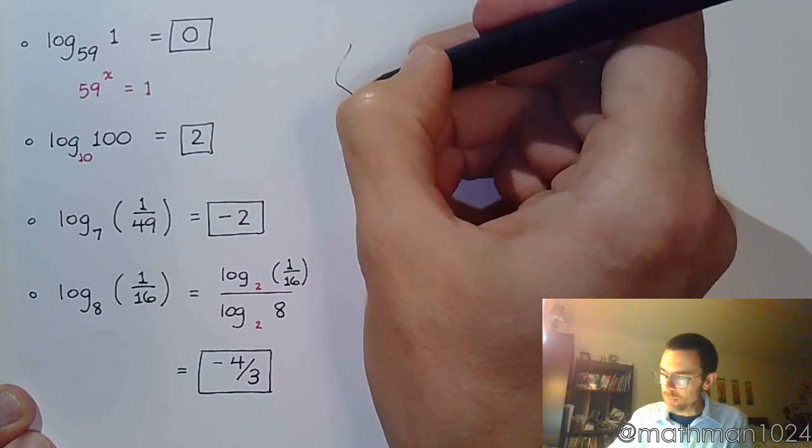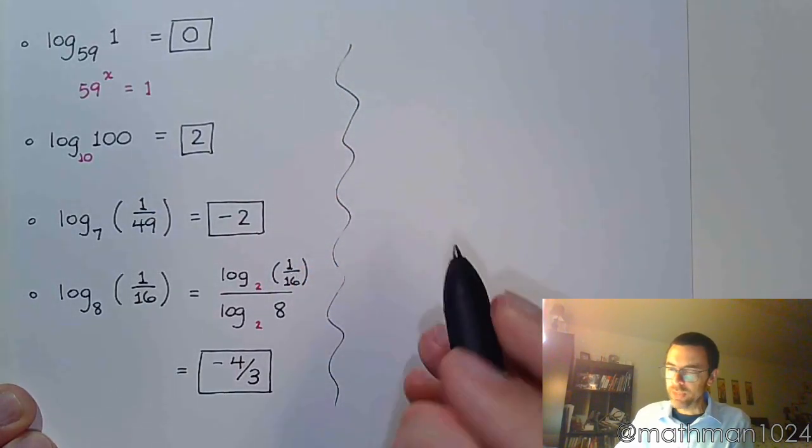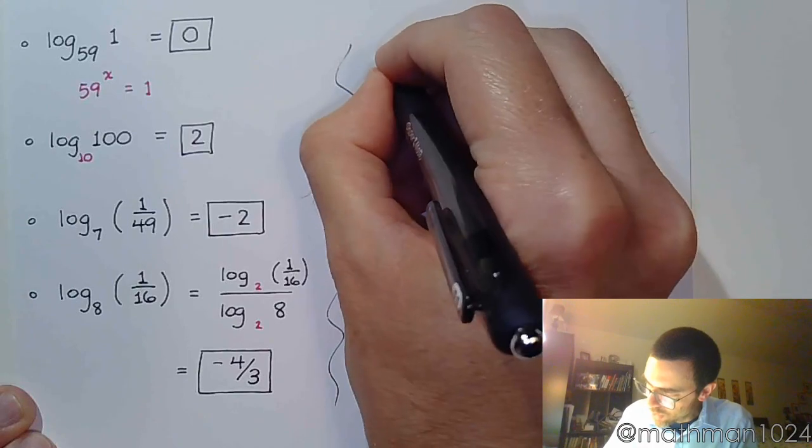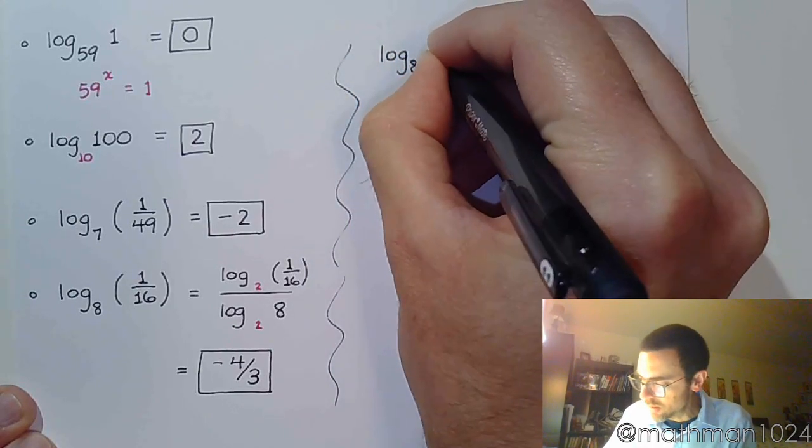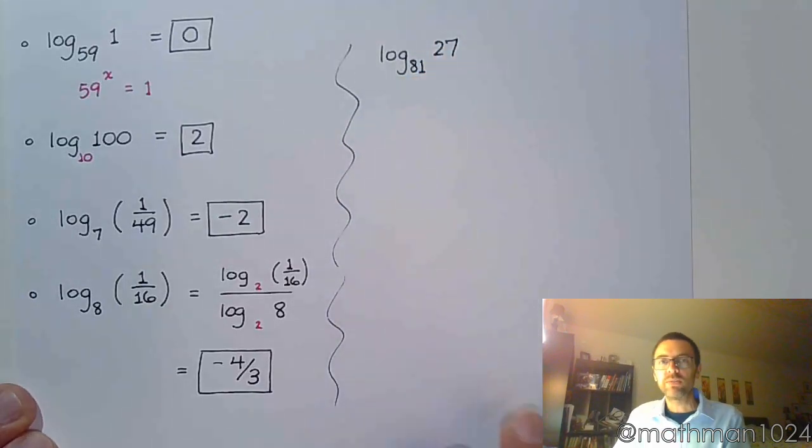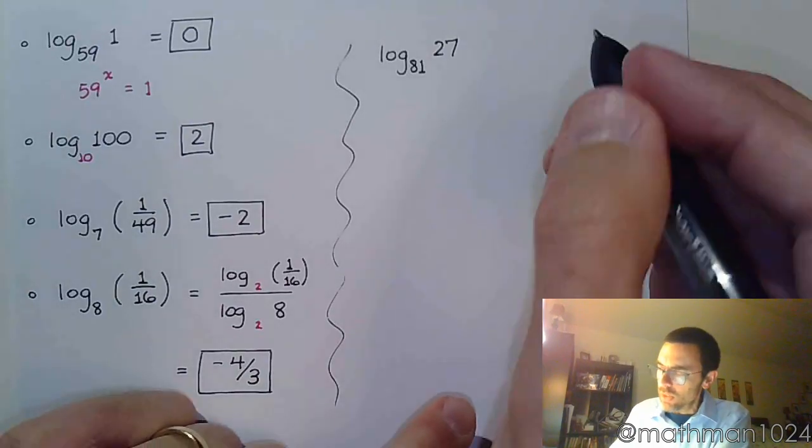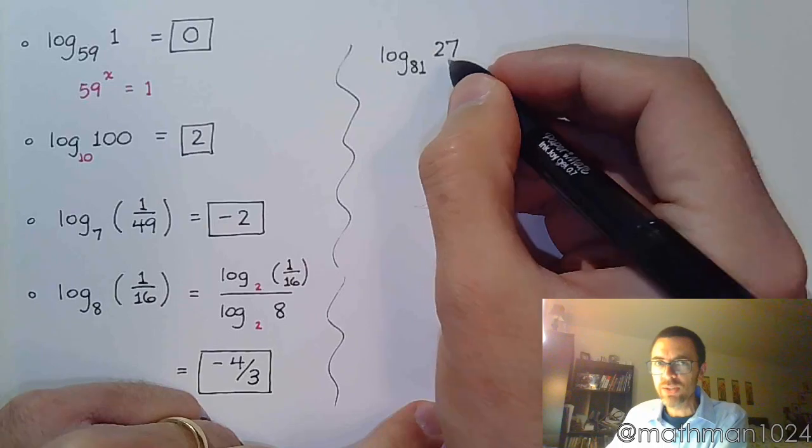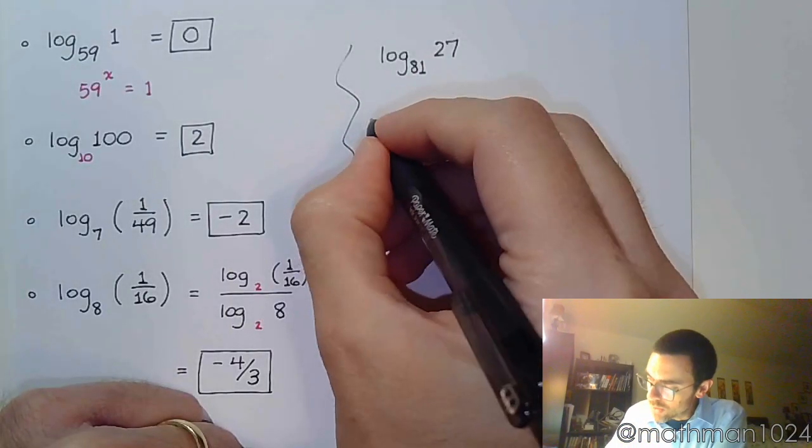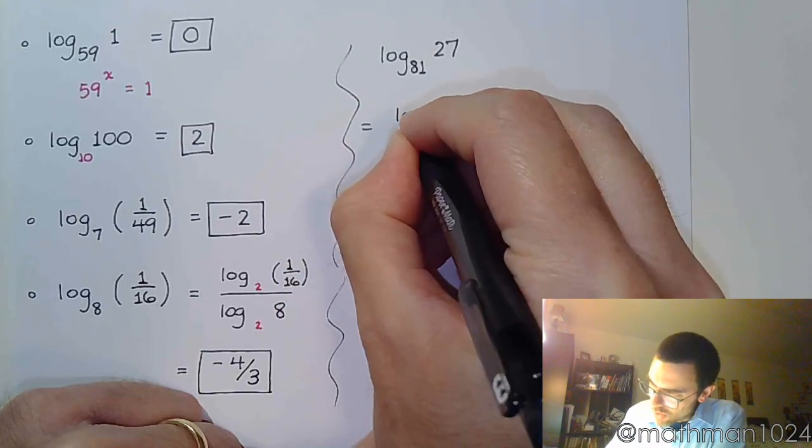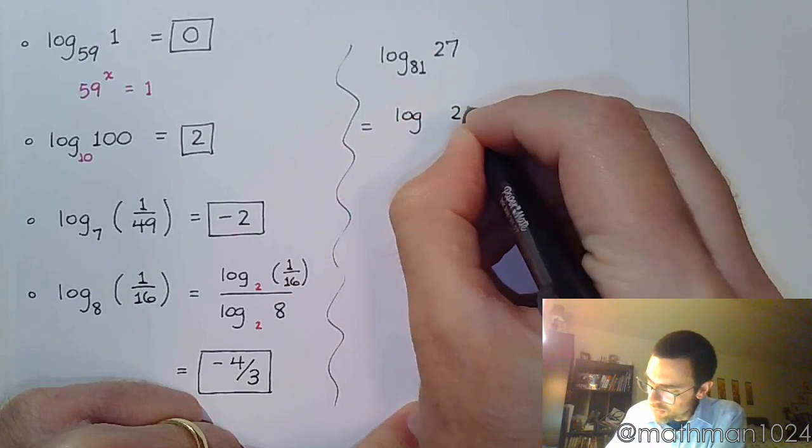Now, we've got a couple more problems to work through. I know it can be done. Let's do log base 81 of 27. If we can recognize these guys have a common base, then we can do the change of base theorem. Okay? So, the common base between these guys, this is where you have that power sheet so you can get very familiar with your powers.